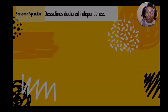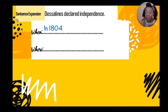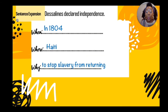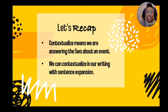Our last example: 'Dessalines declared independence.' The who and the what are here, but it's missing the when, the where, and the why. When: 1804. Where: Haiti. Why: to stop slavery from returning. Expanded sentence: 'In 1804, Jean-Jacques Dessalines declared independence in order to stop slavery from returning to Haiti.'